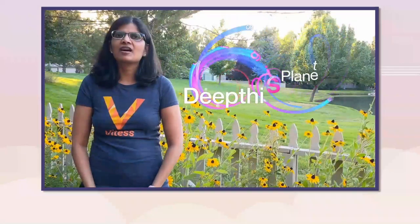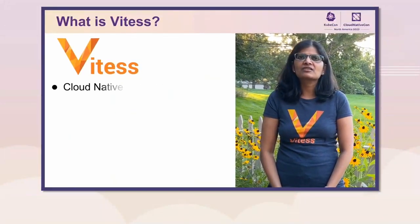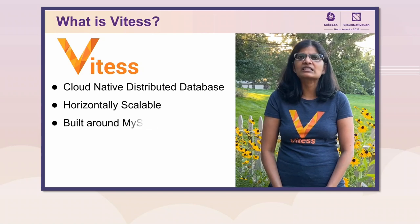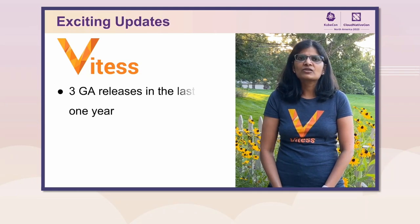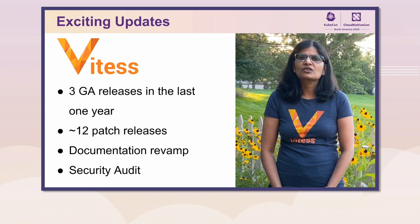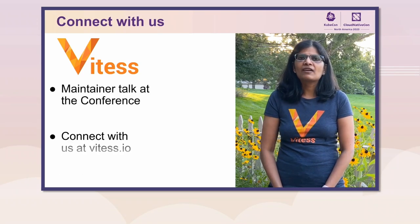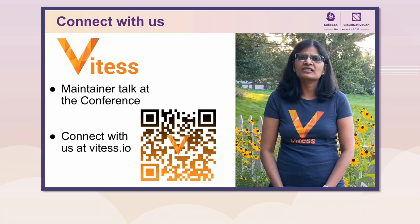My name is Deepti Sigredi, and I'm a maintainer and project lead for Vitess, which is a graduated project. Vitess is a cloud-native distributed horizontally scalable database that is built around MySQL. Vitess is being run by many large web applications like Slack, GitHub, and JD.com. In the past one year, we have shipped three GA releases of Vitess, 12 patch releases, and we have revamped the documentation. We have also passed a security audit. We've just announced the general availability of Vitess release 18. We will have a maintainer talk at the conference, and I invite you to join us there to learn more about Vitess. If you would like to join our community, please feel free to join our Slack or GitHub.